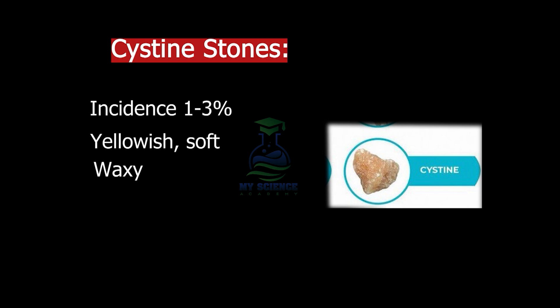The incidence of cysteine stones is just one to three percent. They are yellowish in color and their structure is soft and waxy. Finally, we will talk about the treatment of kidney stones. There are various types of treatments.